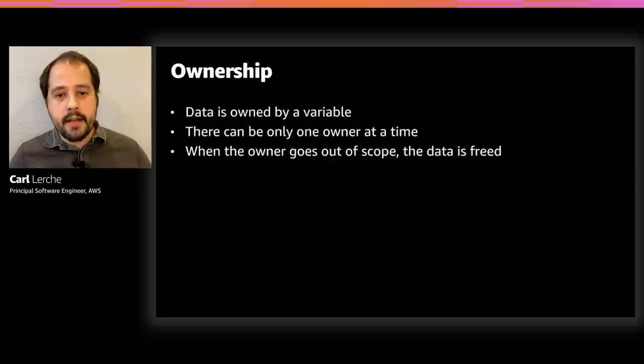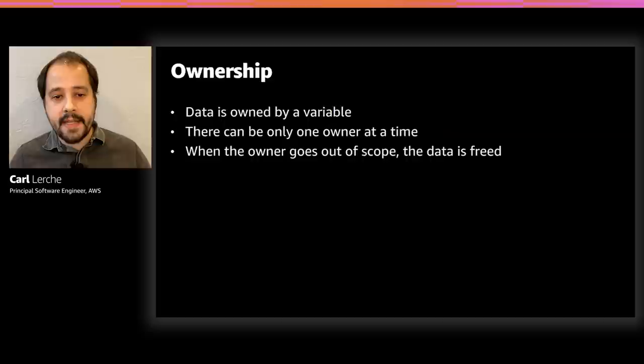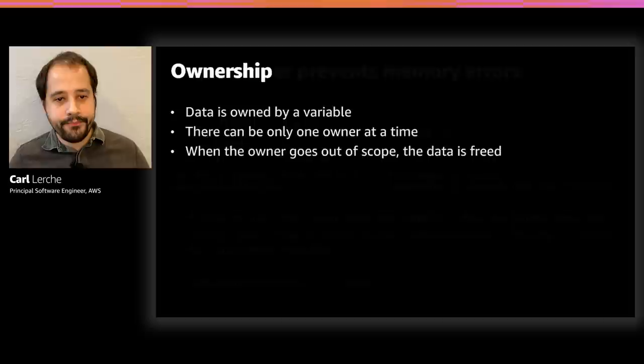Rust implements compile-time memory safety verification using a concept called data ownership. In Rust, data can only have one owner, and the owner of that data is a variable or a struct field. When that variable goes out of scope, the data becomes unreachable and it's freed. With that one-owner requirement, the Rust compiler is able to statically track the lifetime of data as it flows through the program. Let's work on a quick example.